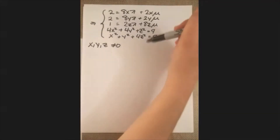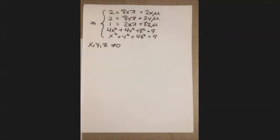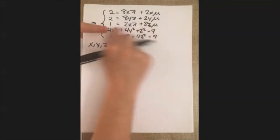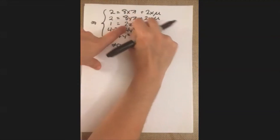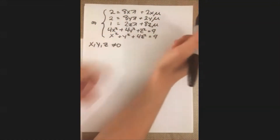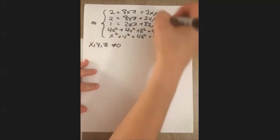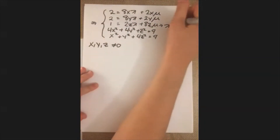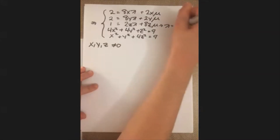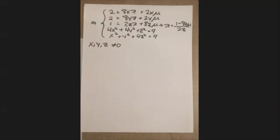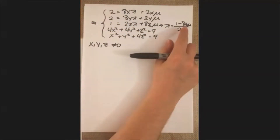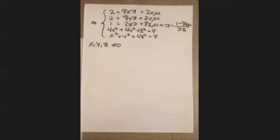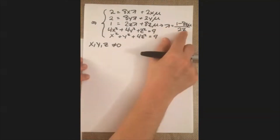For the general strategy, I'm going to start with the third equation — 1 = 2zλ + 8zμ — because it's structurally distinct from the other two, with a 1 instead of a 2 and the coefficients on z swapped. I'm going to isolate lambda there, getting: λ = (1 − 8zμ) / (2z). Then I'll substitute that into the first two equations and start eliminating variables.